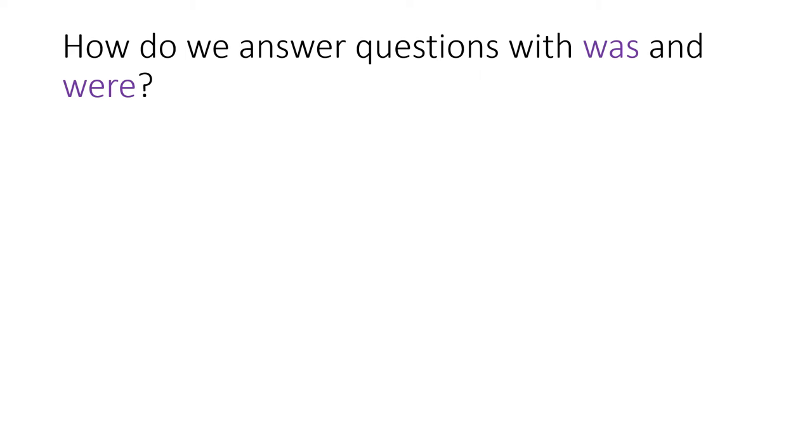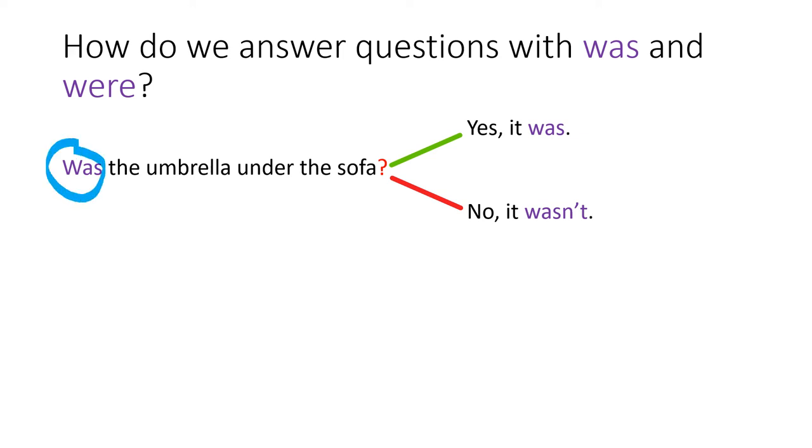But now, how do we answer these questions with was and were? Well, let's see. Was the umbrella under the sofa. We can say, yes, it was or the negative. No, it wasn't. Remember, in the question, if we use was, we have to use was or wasn't in the answer.